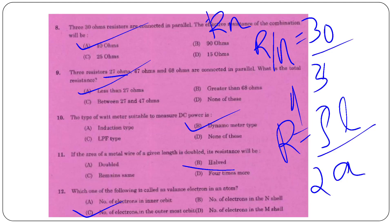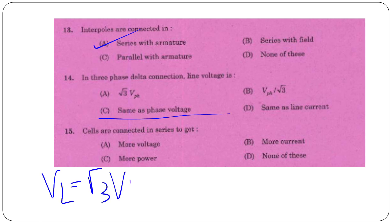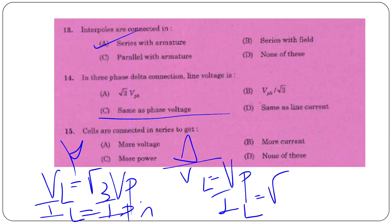Valence electrons are the electrons in the outermost shell of an atom. Interpoles are in series with the armature. Three-phase delta connection: phase voltage equals line voltage. Star connection: line voltage = √3 × phase voltage. Star connection: line current = phase current. Delta connection: line current = √3 × phase current, line voltage equals phase voltage.